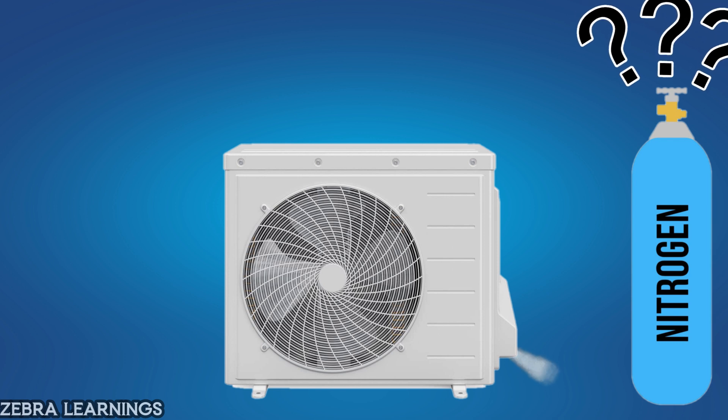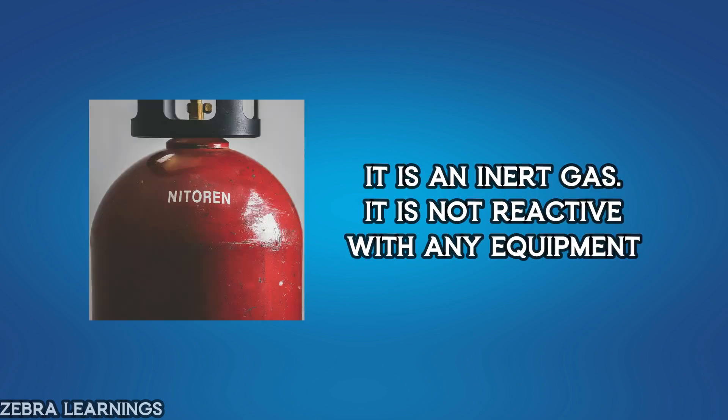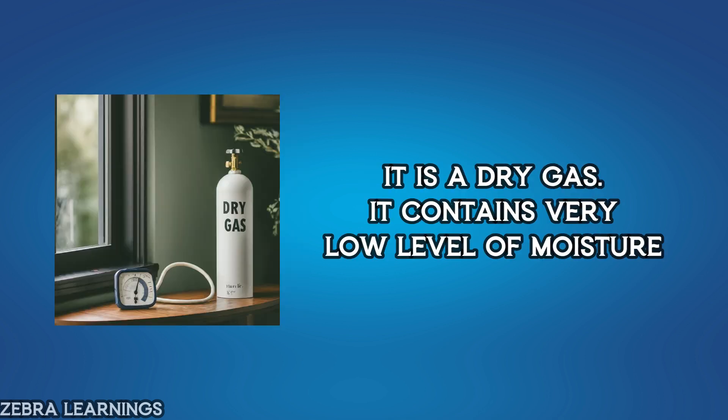Why is nitrogen gas used for leak detection in AC units? There are several reasons. Nitrogen is an inert gas, meaning it is non-reactive. Since it is non-reactive, it does not react with any component in the AC equipment. Therefore, there is no risk of using nitrogen gas in an AC unit. Also, nitrogen is a dry gas, meaning it contains very low levels of moisture. This prevents corrosion from occurring in the equipment.